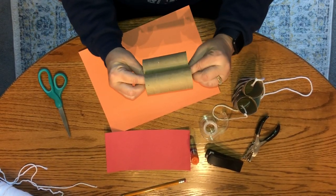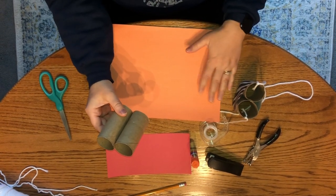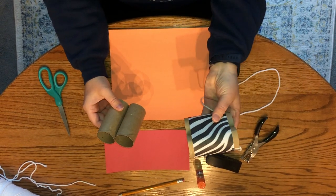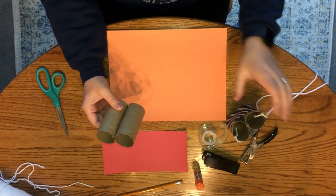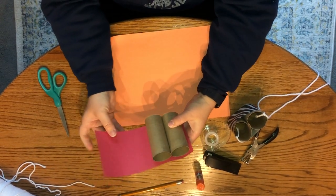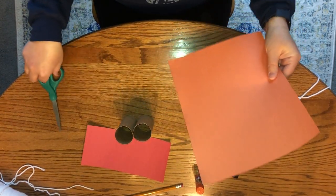After you do that, if you want, you can cut a piece of paper, construction paper. If you have some fun paper like this zebra print, that would be great. You can cut it the length of your tube. You can cut it a little smaller than your tube, whatever you think would be best.